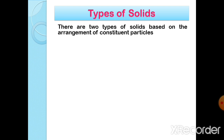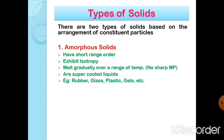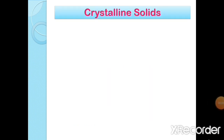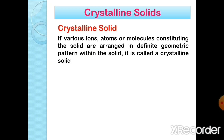There are two types of solids based on the arrangement of constituent particles. First type: amorphous solids. They have short range order, they exhibit isotropy, they melt gradually over a range of temperature and do not have a sharp melting point. They are considered as super cooled liquids. Examples are rubber, glass, plastic, gels, etc. Second type: crystalline solids. They have long range order, exhibit anisotropy, have a sharp melting point, and are considered as true solids.